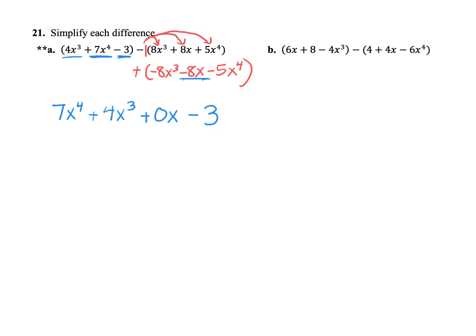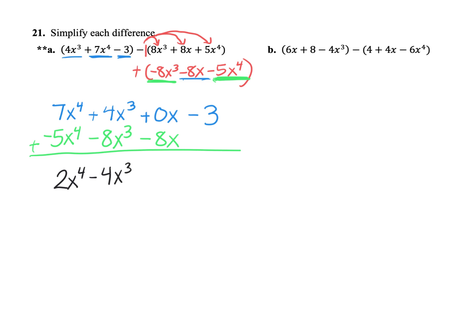Now if we take the biggest exponent in the polynomial here — remember I changed it to addition, so now it's a negative 5x to the fourth — I'm going to line that up with my other x to the fourth. And then the negative 8x cubed will line up with this x cubed, and the minus 8x will go with the 0x, because I left that extra place for it. Now we can go ahead and add them together. 7 and negative 5 add to 2, so we have 2x to the fourth. 4 plus negative 8 is negative 4, so minus 4x cubed. 0 minus 8x is just negative 8x. And then we have the negative 3 on the end. And that is our final answer.